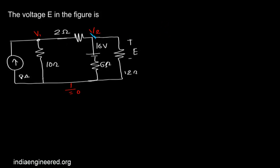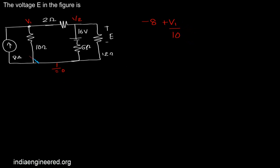Writing KCL at node 1: we assume the incoming current is negative, so minus 8 amps, plus the outgoing currents are positive, so V1 by 10 — that is the current flowing through 10 ohms — plus the current through 2 ohms will be V1 minus V2 by 2, and this will be zero. This will be our first equation.